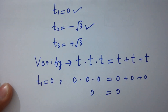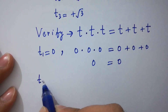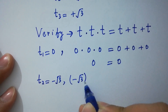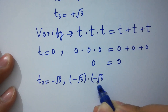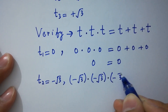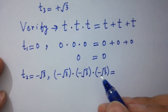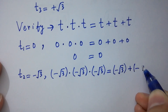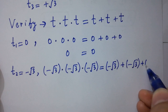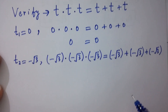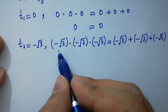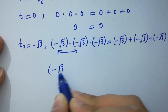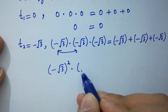Now take t2 equals minus square root of 3. Substituting, we have minus square root of 3 times minus square root of 3 times minus square root of 3 equal to minus square root of 3 plus minus square root of 3 plus minus square root of 3.